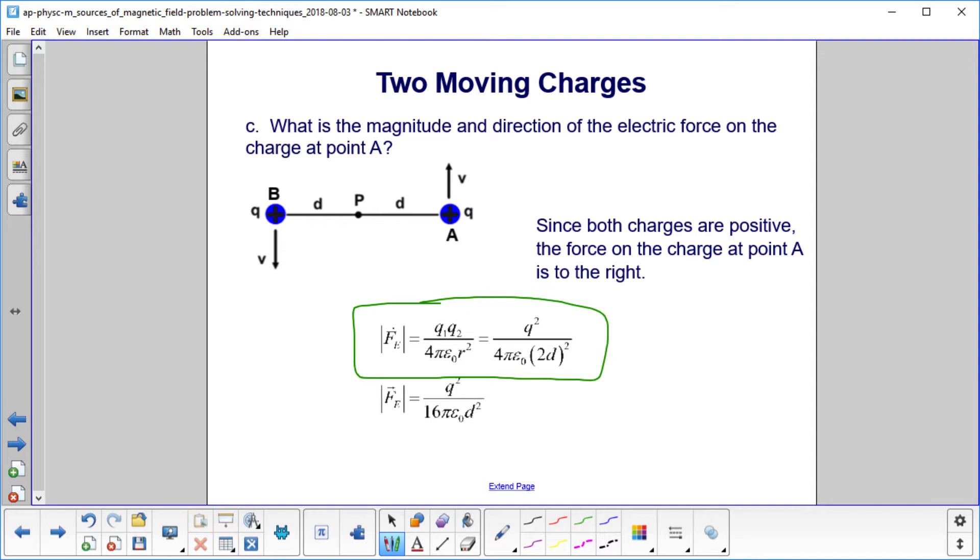The distance between them squared. So both are charged Q, and the distance between the charges is 2D. So you multiply it out, you get Q squared over 16 pi epsilon zero D squared.